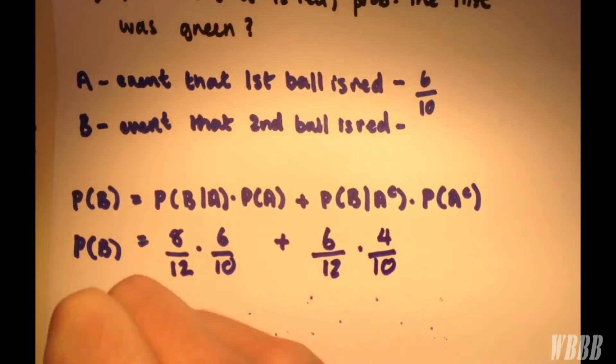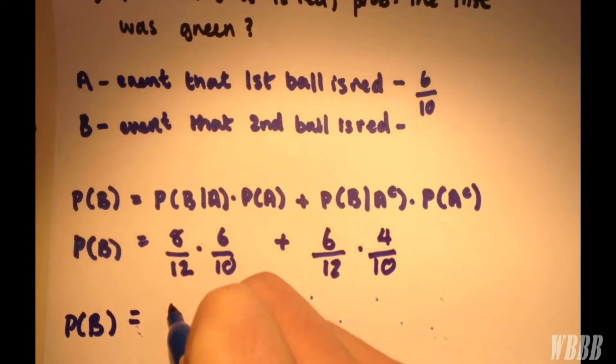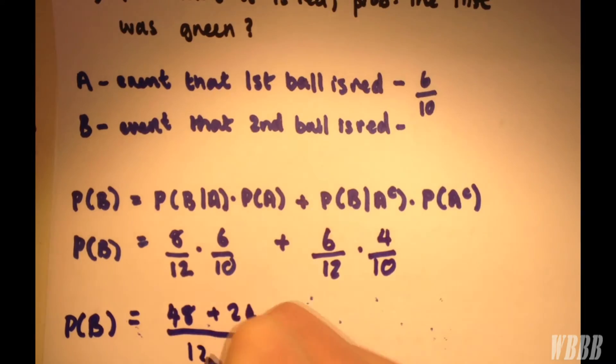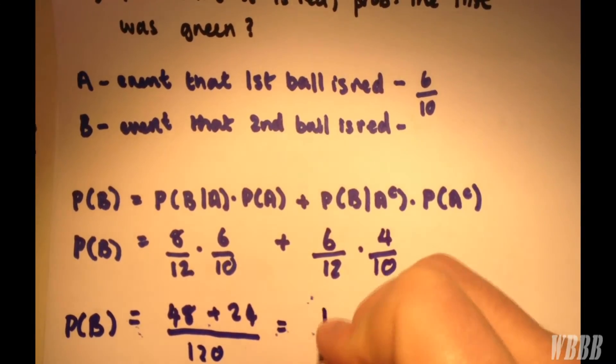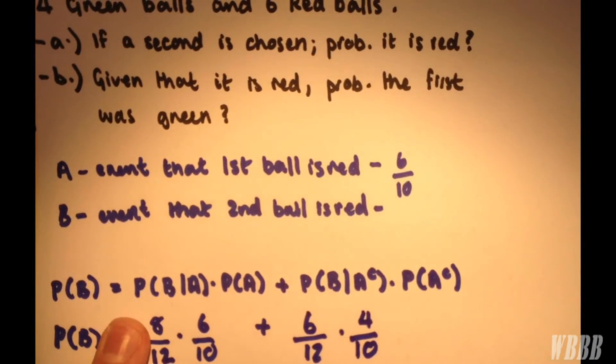If you plug it into a calculator or do it by hand, you end up with (48 + 24)/120, which equals 16/25. And that's how we use the partition theorem.